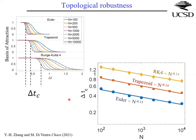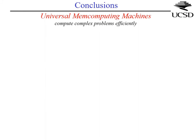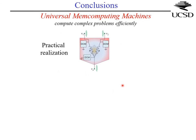In conclusion, I showed a new class of machines we call MemComputing machines. They are universal — Turing-complete — and designed to compute complex problems efficiently. You can design them for analog or digital problems. Unlike quantum computers, you can simulate their differential equations in software and even simplify those equations to speed up numerics, as long as the underlying physics is preserved.